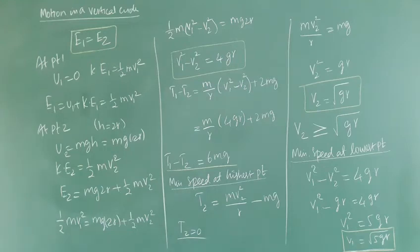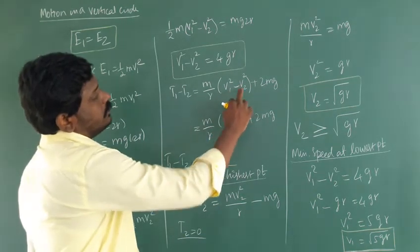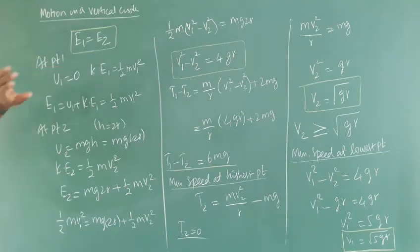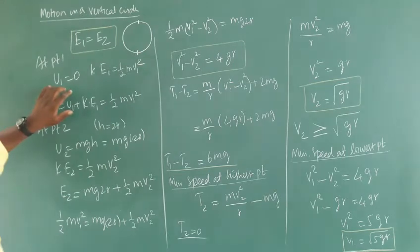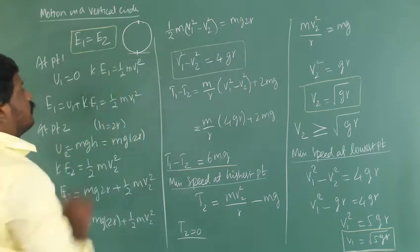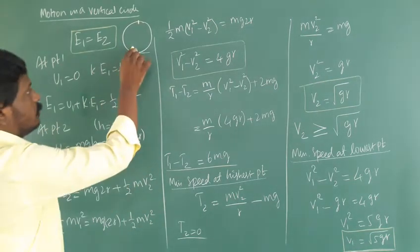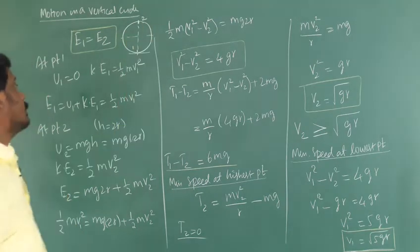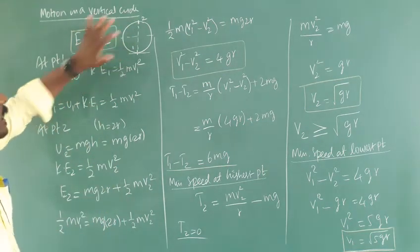Using the law of conservation of energy, we can find V1 squared minus V2 squared. At point 1, the lowest point, the potential energy is equal to 0 because the object is not lifted to any height. It moves with a certain velocity, so the kinetic energy is equal to half M V1 squared. The total energy is the sum of potential energy and kinetic energy: half M V1 squared.